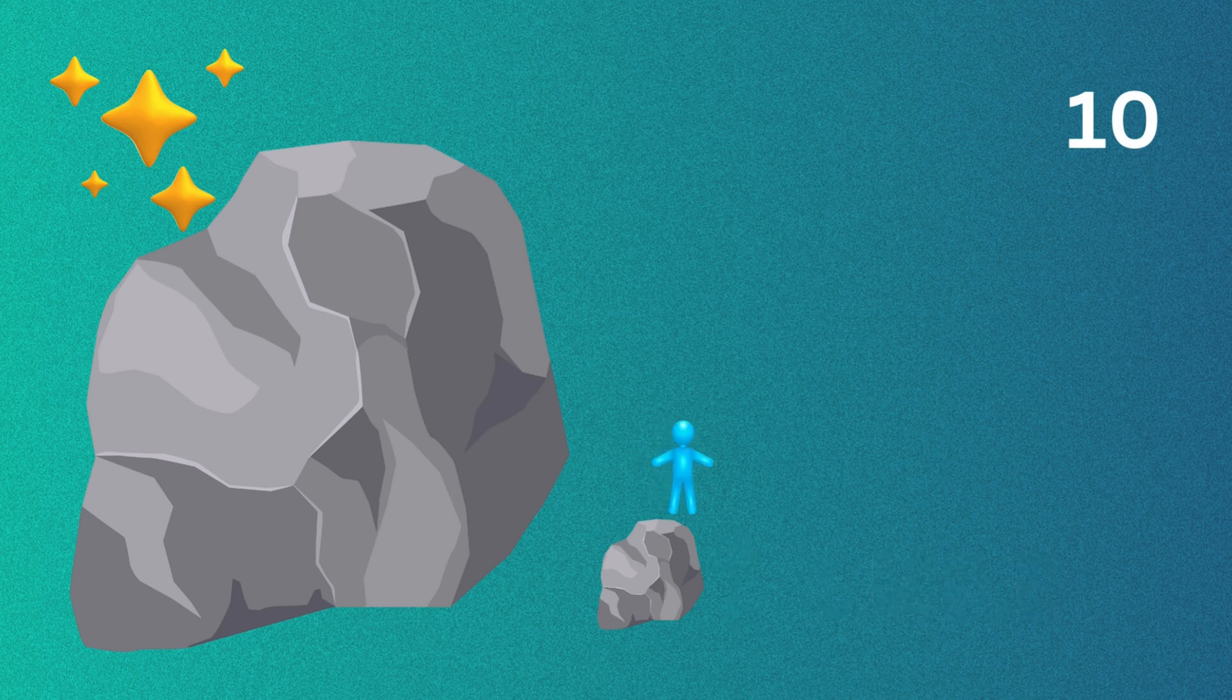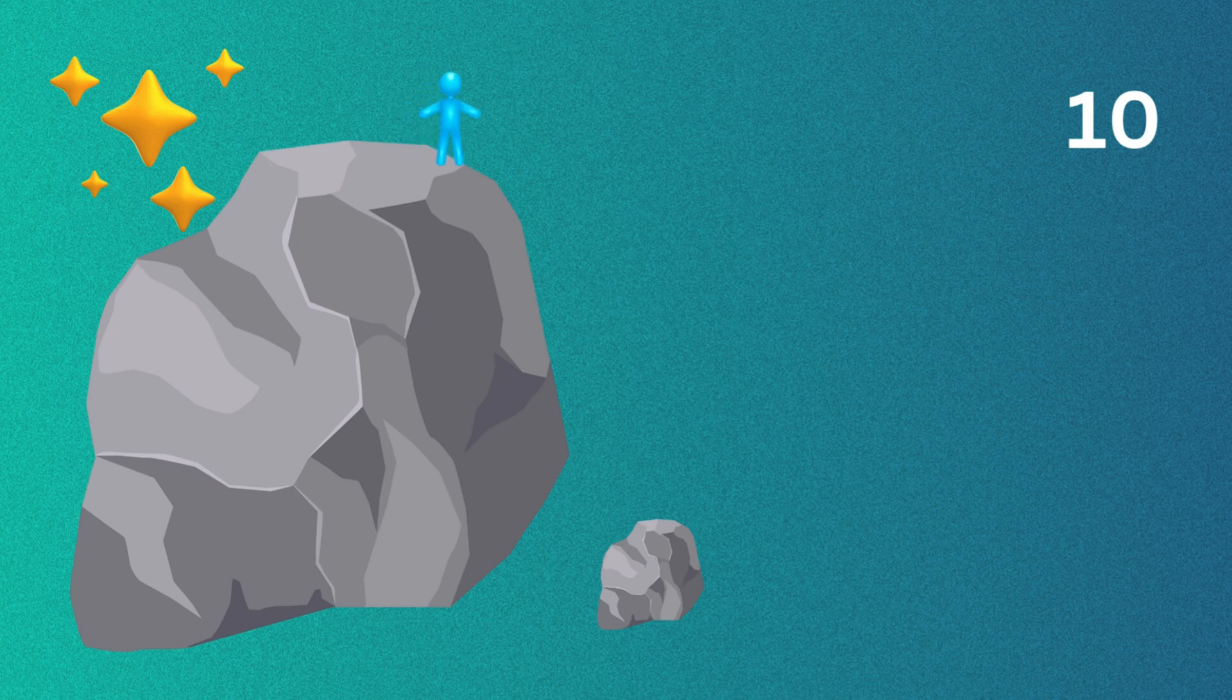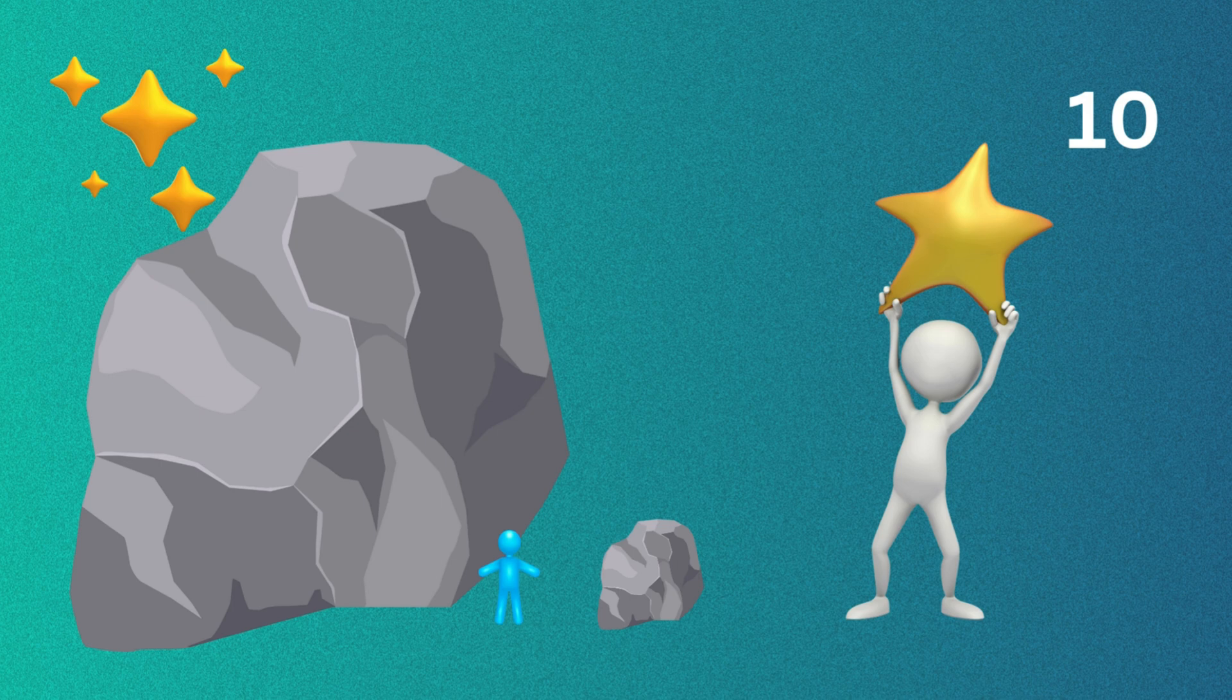If you were to jump off the cliff on Earth, you would die. Sad. But if you were to jump off the cliff on Miranda, you would float down so slowly that you would actually make it. That's because the force of gravity is so much less on Miranda.